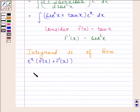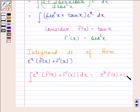We know that integral of e to the power x into f of x plus f dash x dx is equal to e to the power x f of x plus c. So using this, integral is equal to e to the power x tan x plus c.